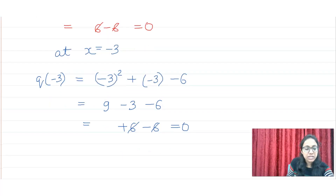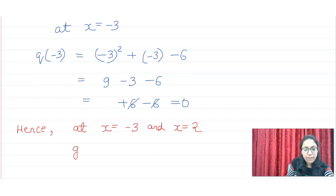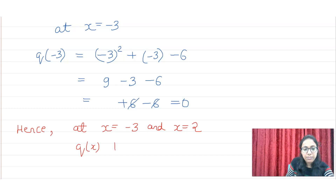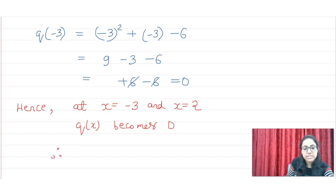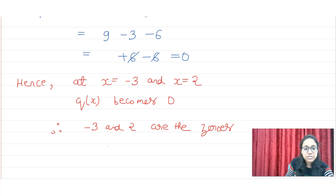Hence we can say that at x = -3 and x = 2, Q(x) becomes zero. Therefore we can say that -3 and 2 are the zeros of Q(x), and hence verified. We have shown the proof that it is like this.